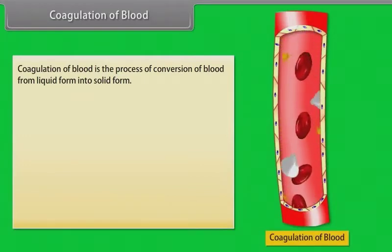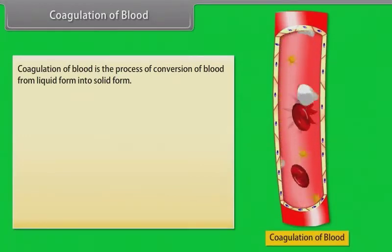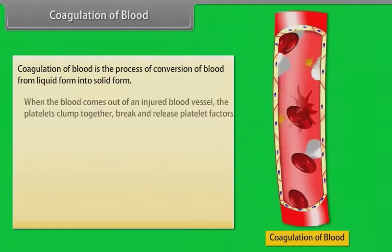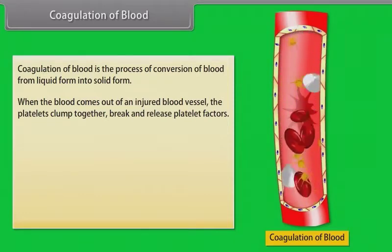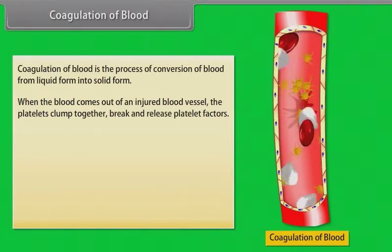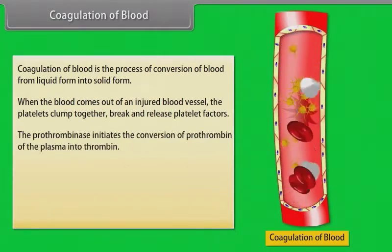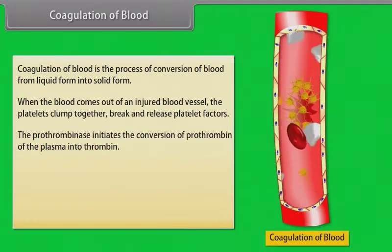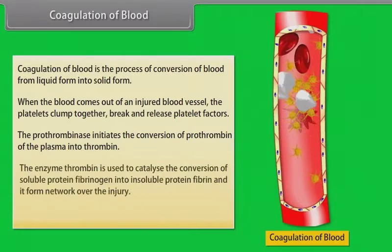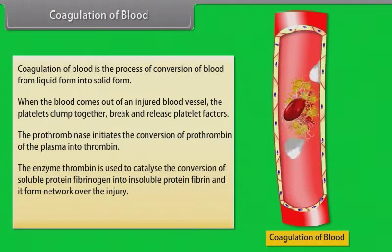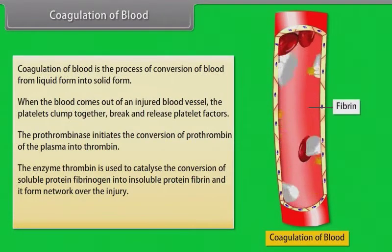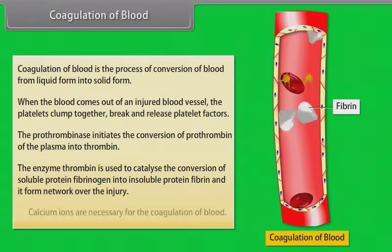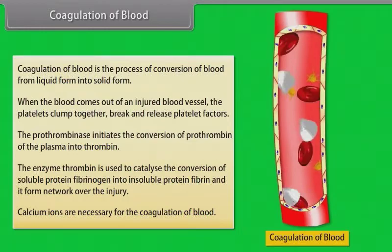Coagulation of blood is the process of conversion of blood from liquid form into solid form. When blood comes out of an injured vessel, platelets clump together, break, and release platelet factors. Prothrombinase initiates conversion of prothrombin into thrombin. Thrombin then catalyzes conversion of soluble fibrinogen into insoluble fibrin, forming a network over the injury. Calcium ions are necessary for blood coagulation.